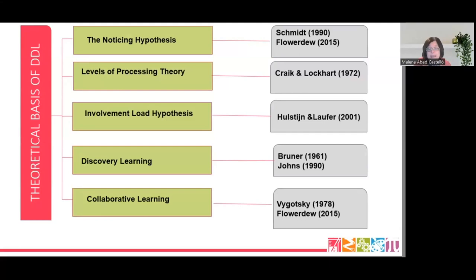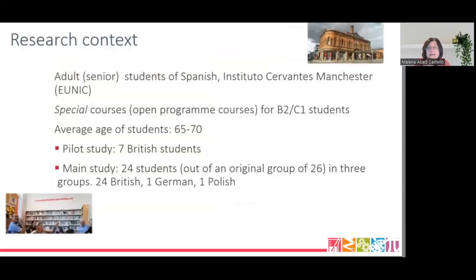This is then my vision of DDL. The study took place at Instituto Cervantes Manchester, and the subjects were senior students of Spanish in what we call special courses — open program courses without fixed syllabuses. The level was, in theory, C1, but there were students fossilized at level B2. The average age of the students was 65 to 70, so quite senior students.